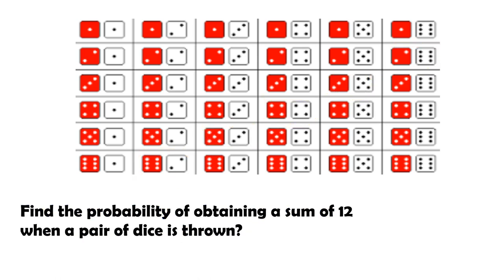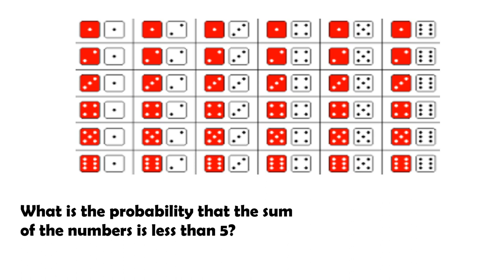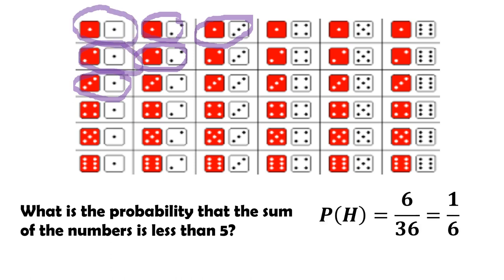Find the probability of obtaining a sum of 12 when a pair of dice is thrown. Looking at the sample space of 36, only 6+6 gives a sum of 12 — that's just 1 outcome. So the answer is 1 over 36. What is the probability that the sum of the numbers is less than 5? The combinations are 1+1, 1+2, 2+1, 1+3, 3+1, and 2+2 — giving 6 outcomes out of 36, or 1 over 6.